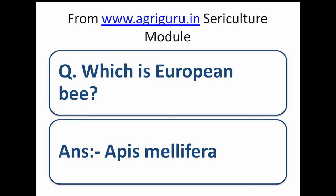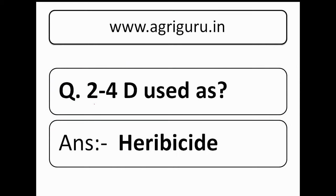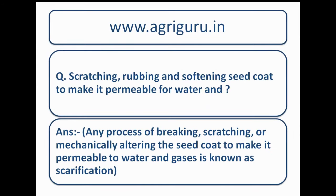Question number 38 from the apiculture module of agriguru.in: which is the European bee? The correct answer is Apis mellifera. Question number 40 from the agronomy module: 2,4-D is used as what? The options are herbicide, insecticide, or pesticide. The correct answer is herbicide.